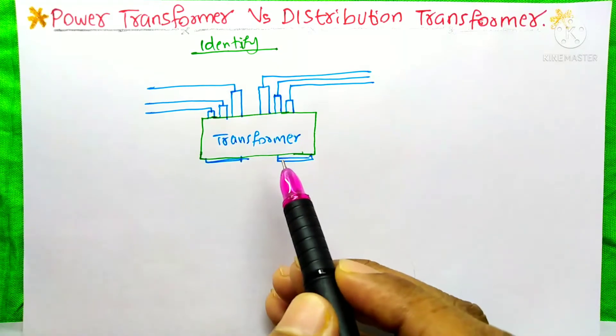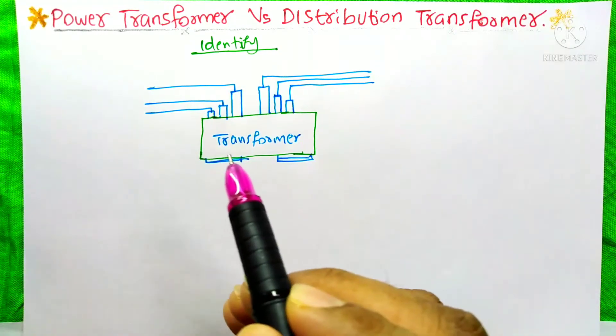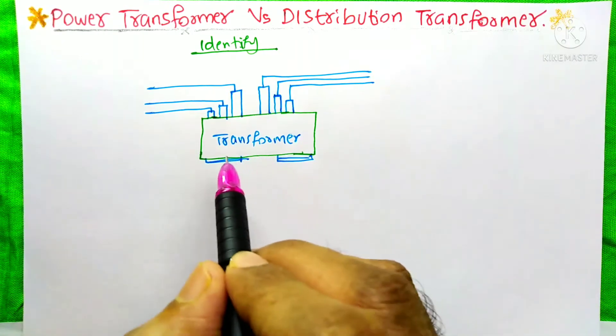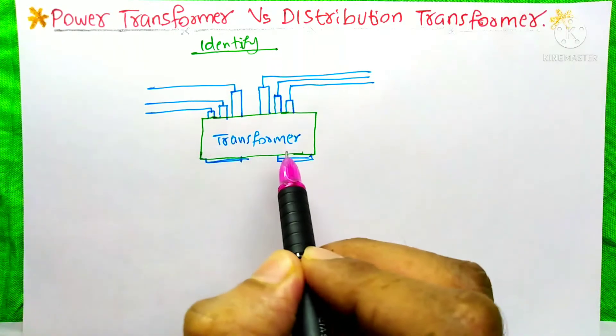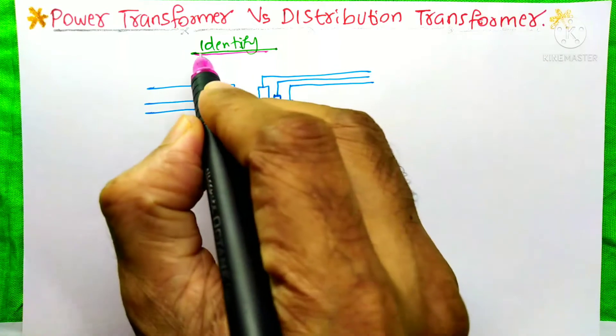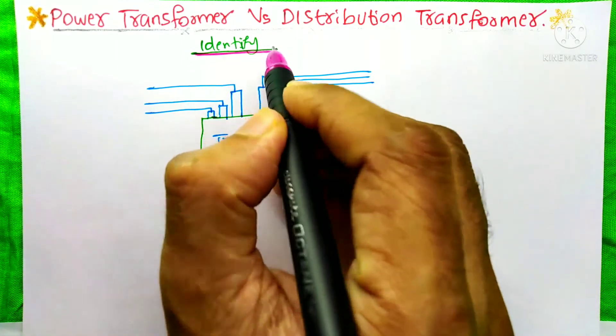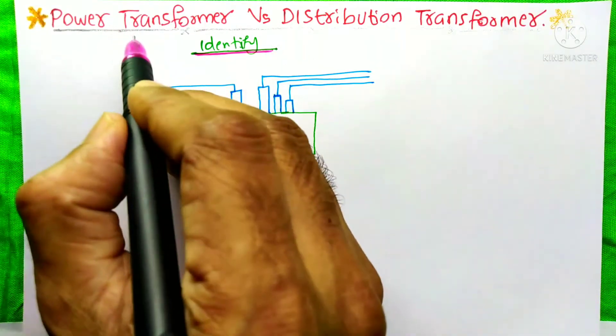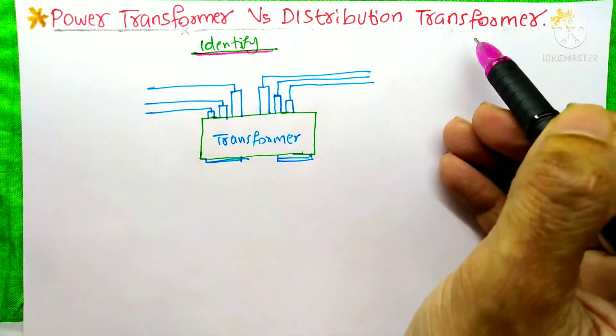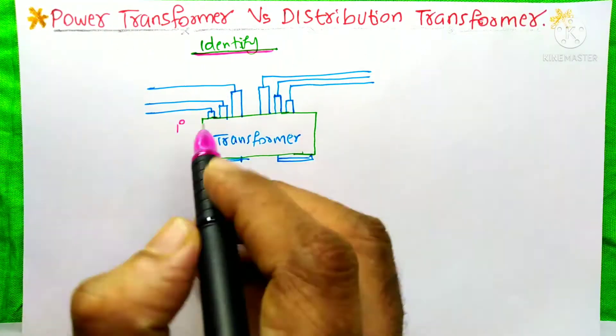From the first look itself, we could easily identify which is our transformer — whether it is the power transformer or the distribution transformer.